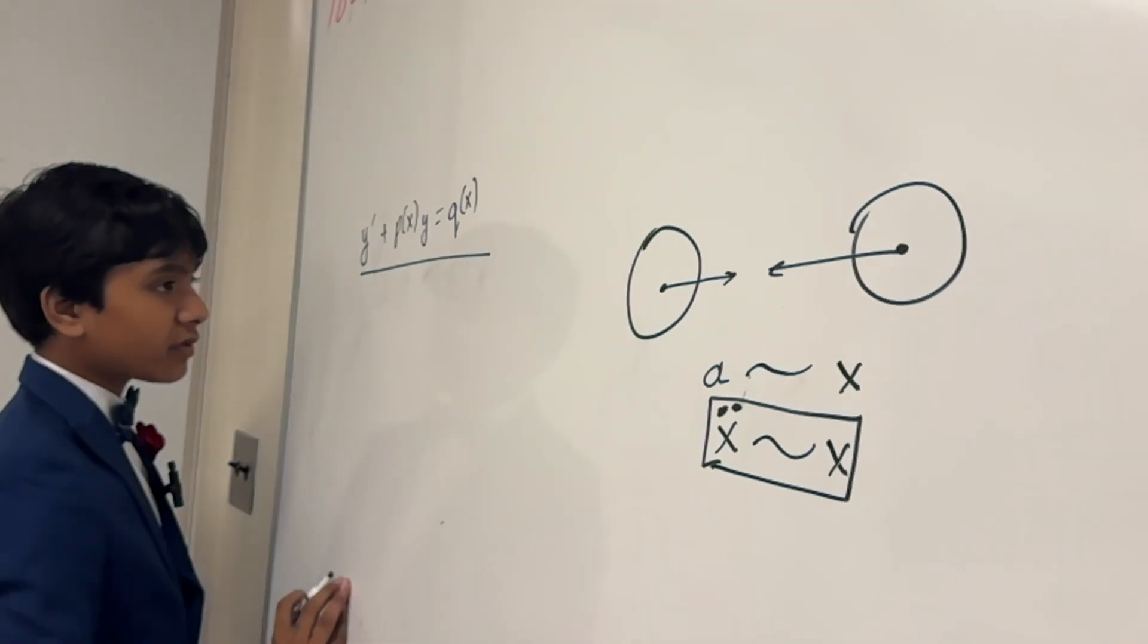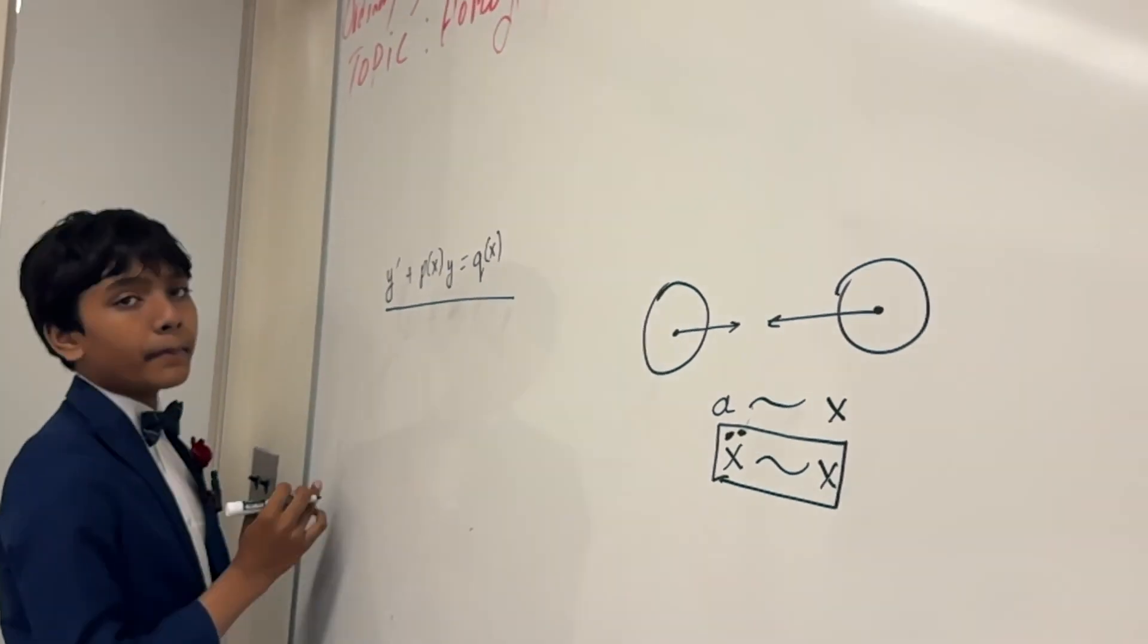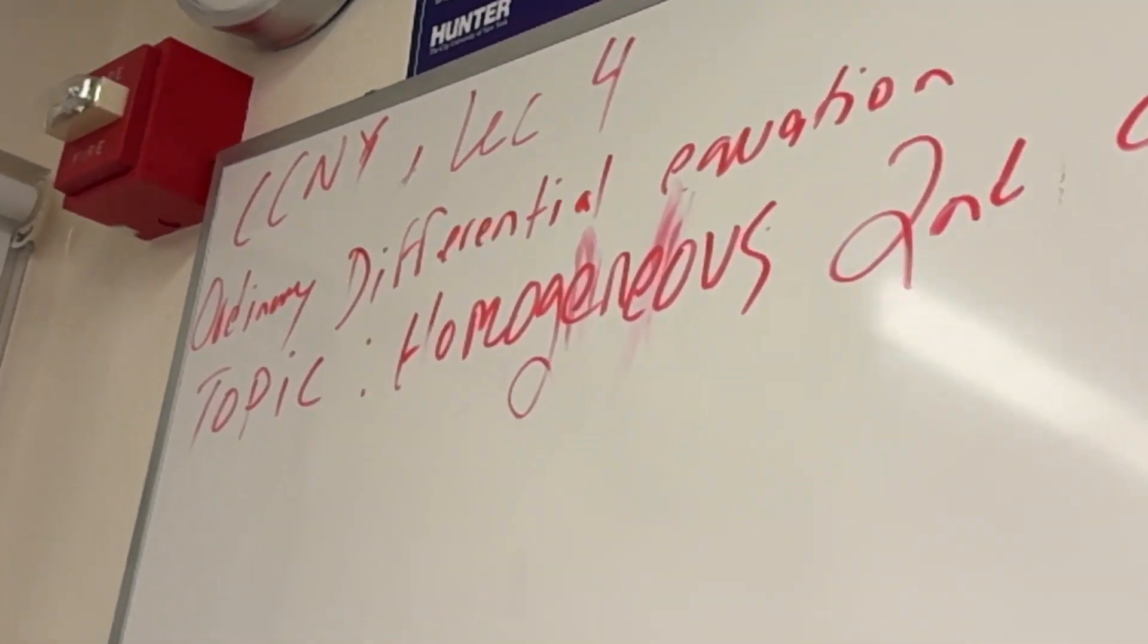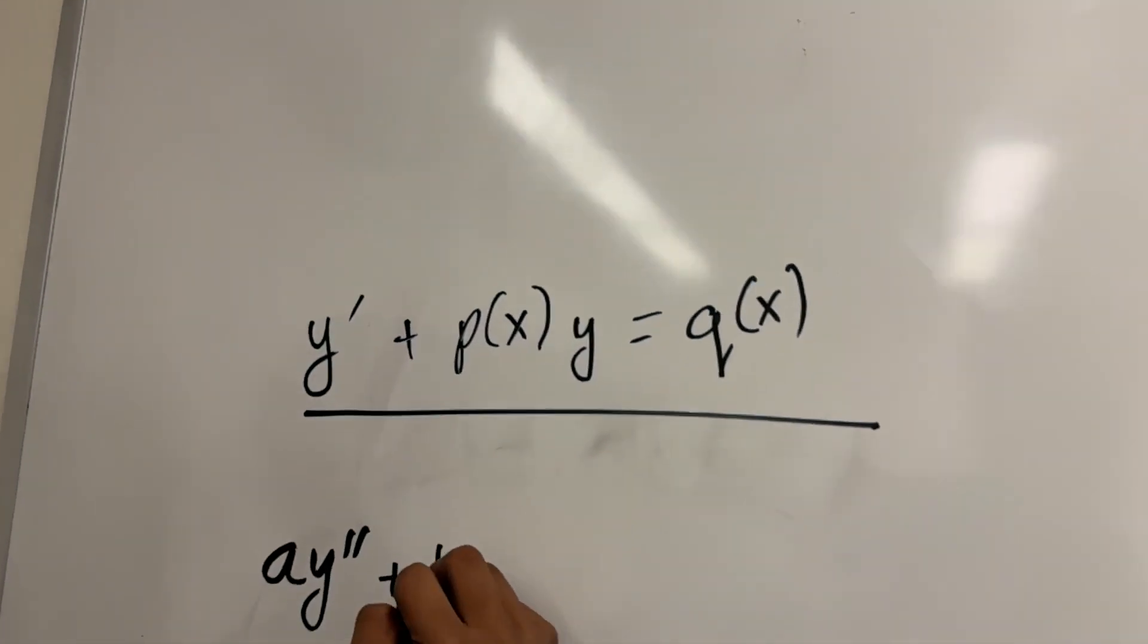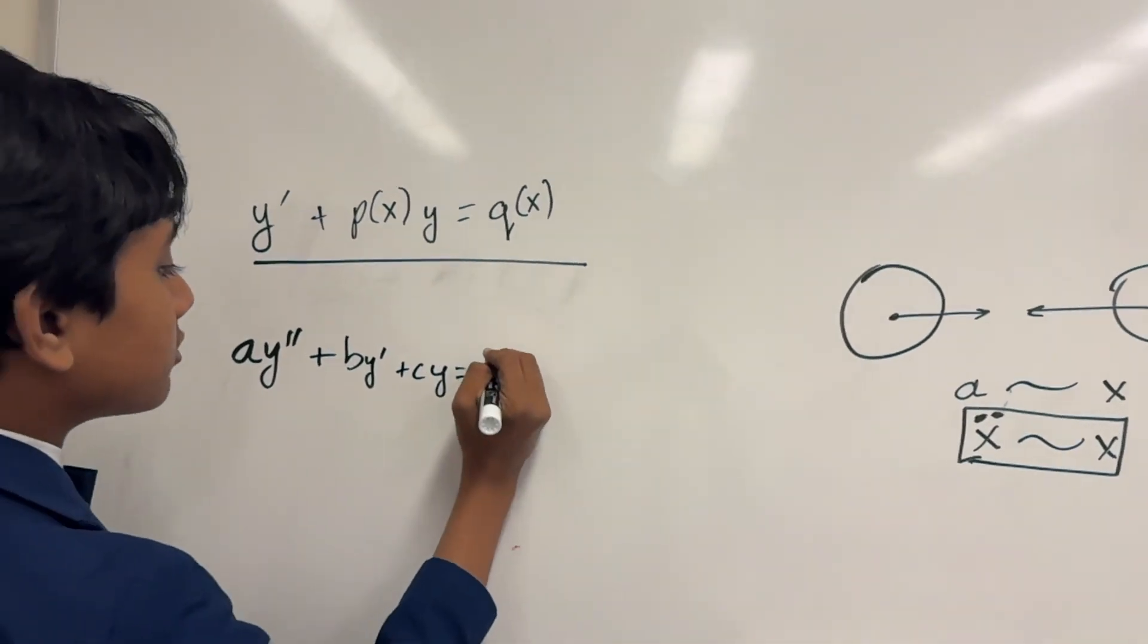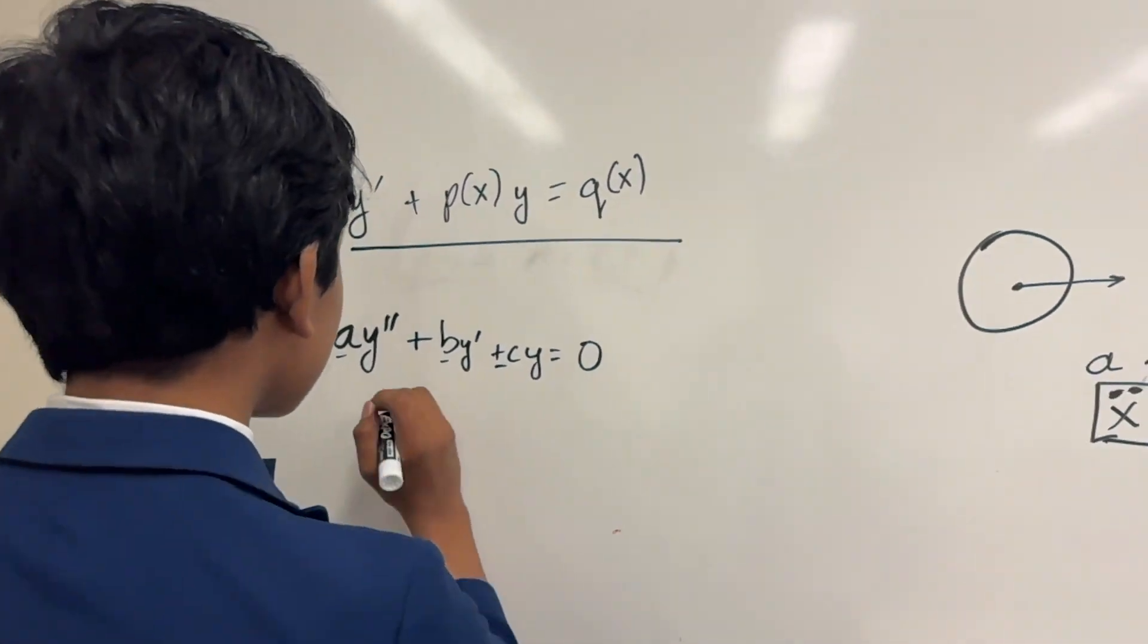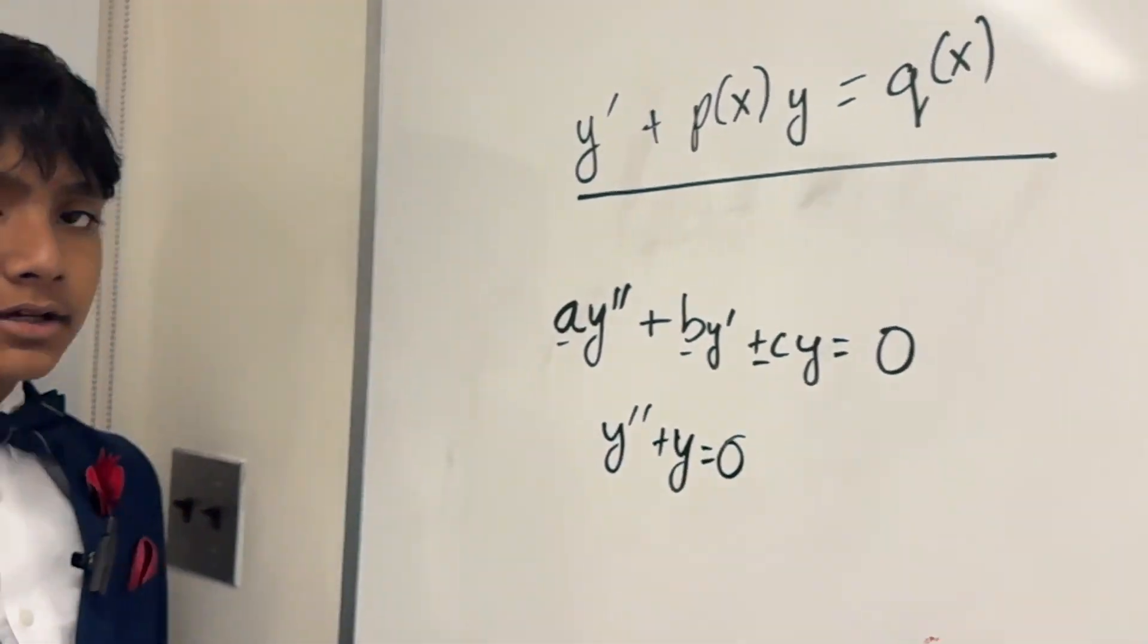Now, the most simple form of second-order differential equations are linear homogeneous second-order differential equations. Yeah, it's a mouthful, isn't it? These are equations of the form a y double prime plus b y prime plus c y is equal to zero, where a, b, and c are just coefficients. For example, simplest case: y prime prime plus y is equal to zero.